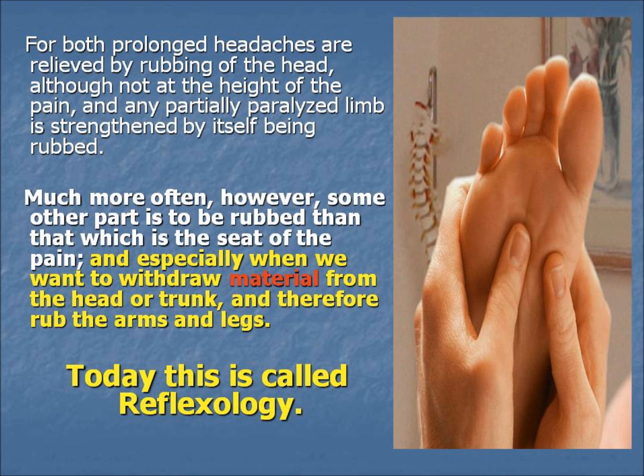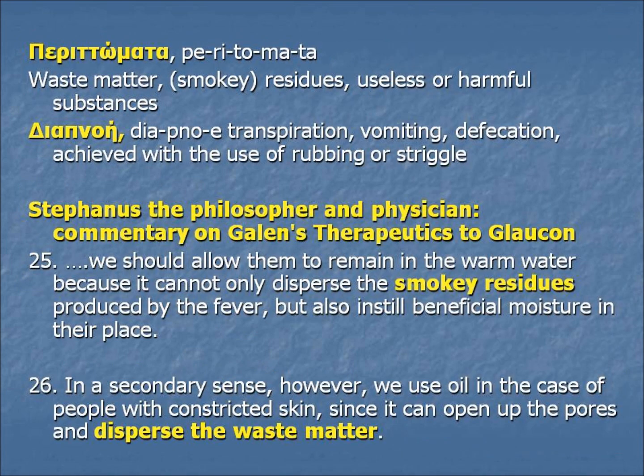What is of utmost interest in this passage is the use of the word 'material.' I want to explain what this means. For Hippocrates and the ancient Greeks, the word 'perisomata' — used first by Hippocrates, then by many others like Aristotle, Plutarch, Galen, and more — means waste matter, residues, in general useless or harmful substances.